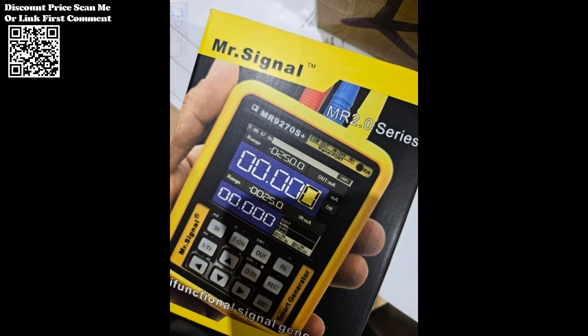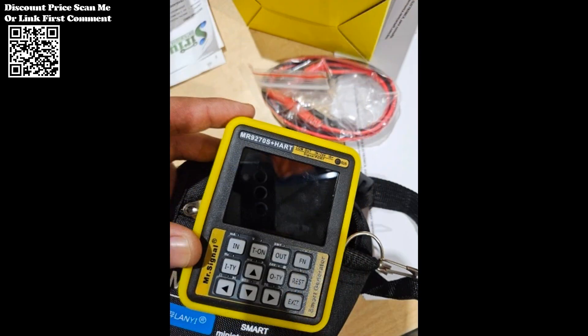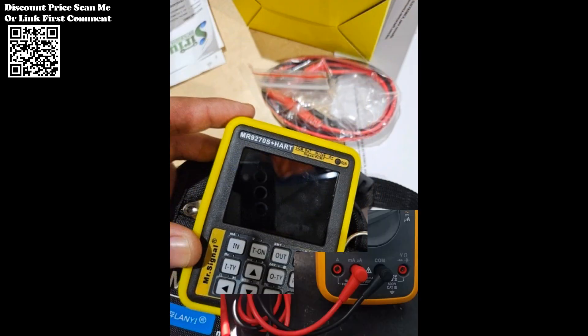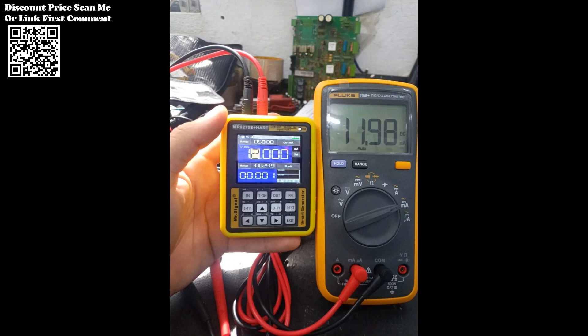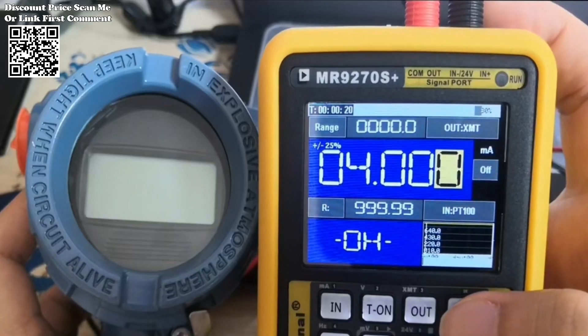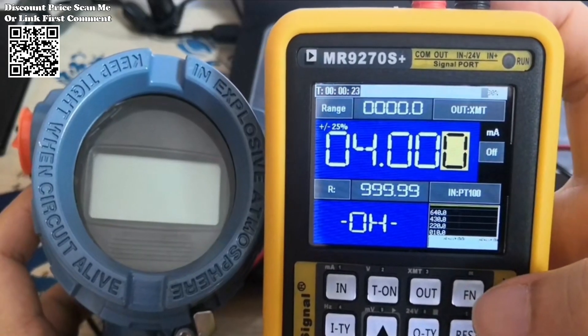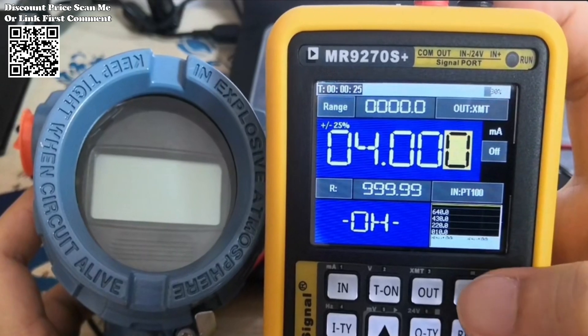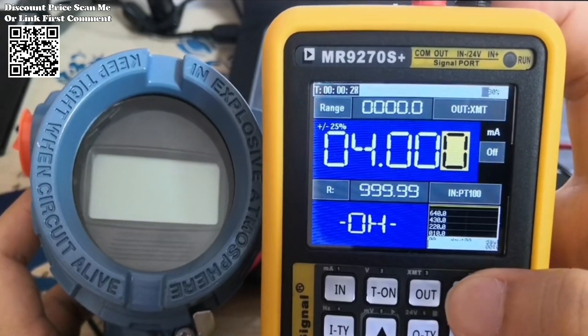Feature 4: Preset values. 9 sets of commonly used signal values can be preset for fast output. Feature 5: Convert the input signal into an output signal. For example, convert the input frequency signal into a current signal and convert the input range from 0 to 1000 hertz to 4 to 20 milliampere.